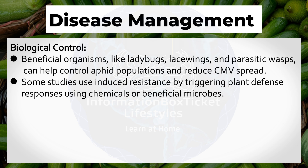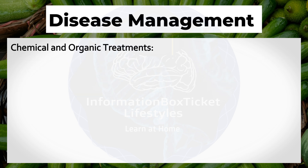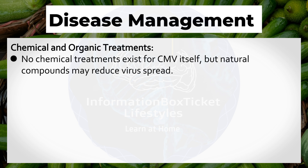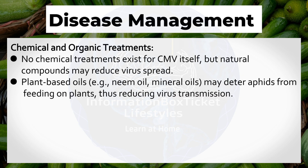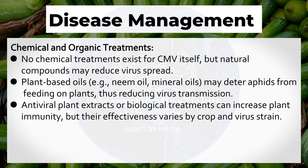Some studies use induced resistance by triggering plant defense responses using chemicals or beneficial microbes. Chemical and Organic Treatments: No chemical treatments exist for CMV itself, but natural compounds may reduce virus spread. Plant-based oils such as neem oil and mineral oils may deter aphids from feeding on plants, thus reducing virus transmission. Antiviral plant extracts or biological treatments can increase plant immunity, but their effectiveness varies by crop and virus strain.